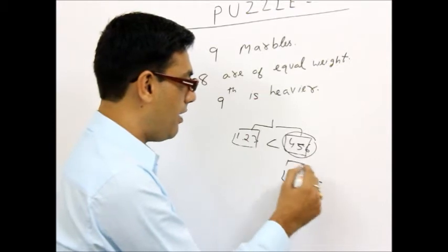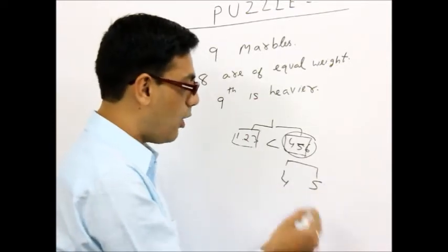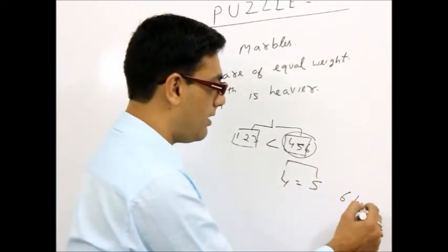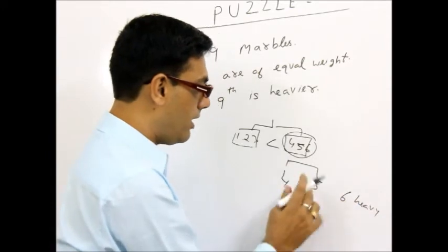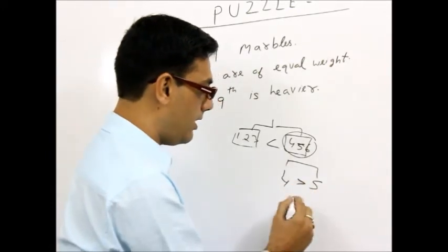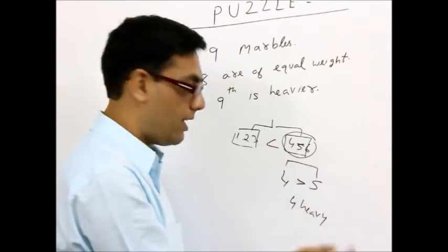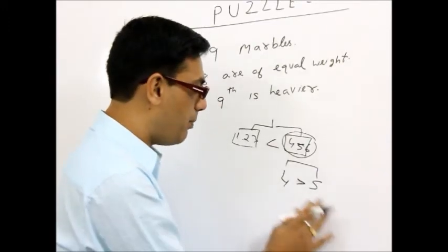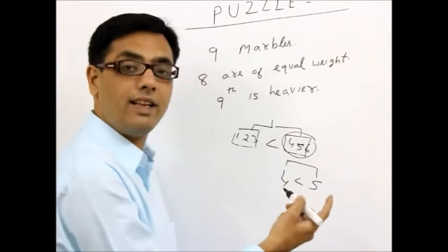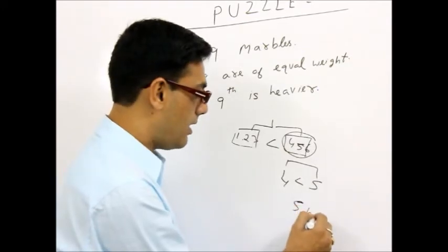I will put 4 here and 5 here in my next reading. And accordingly, if it is equal, the answer is 6 heavy. If it comes out as greater, the answer is 4 heavy. And finally, it is a very simple puzzle. If this is like this, the answer is 5 heavy.